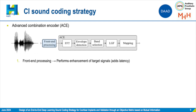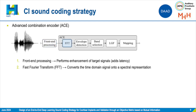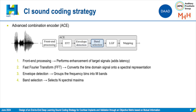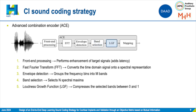First, there will be some front-end processing over the captured audio that will perform enhancement of the target signal, such as speech. Then the FFT, or Fast Fourier Transform, converts the time domain signal into its spectral representation. Then the envelope detection groups the frequency bins into M bands. Out of these M bands, N spectral maxima will be selected by the band selection block. Then the loudness growth function, or LGF, will compress these selected bands between 0 and 1.